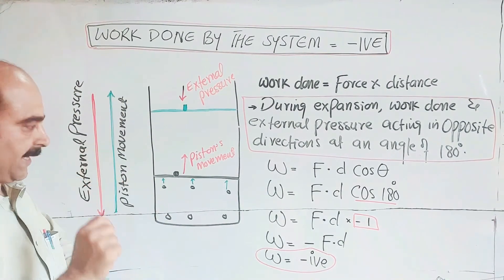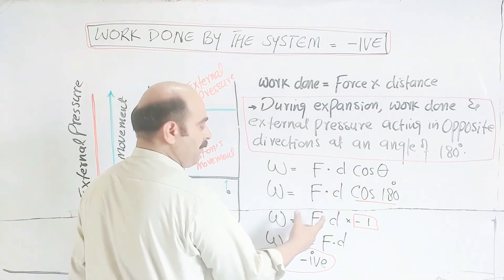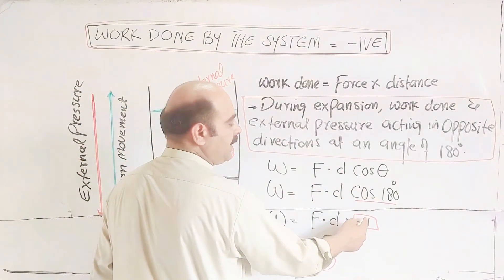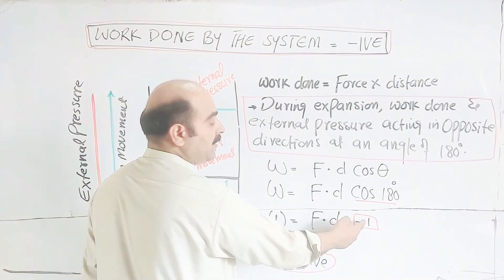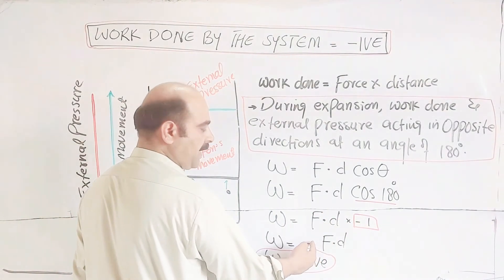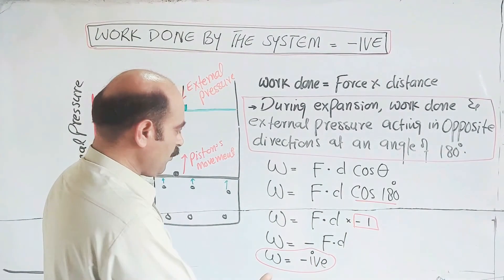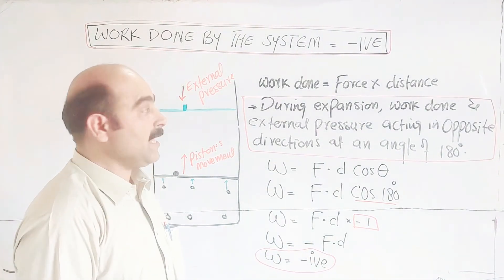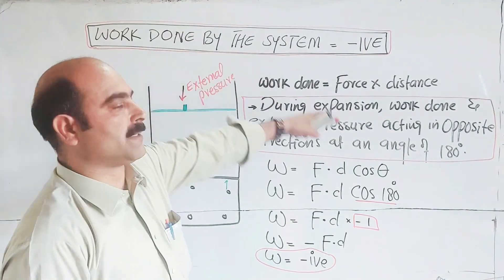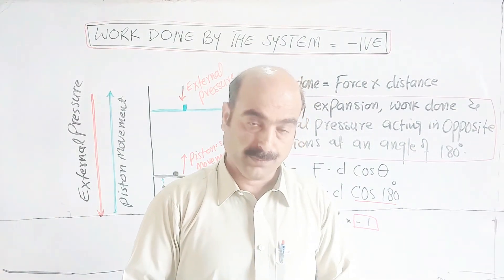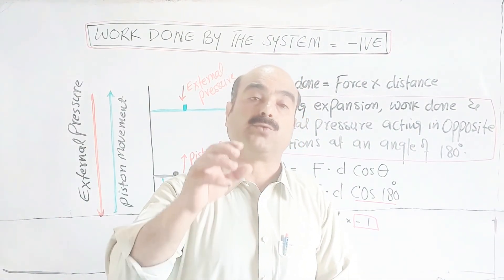W is equal to F times D times cos theta. In opposite directions, they are at 180 angle. W is equal to F times D times cos 180, which is minus one. That's why W has a negative sign. Work done by the system is negative. This is a very important proof and very important topic.